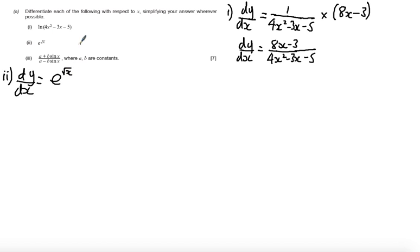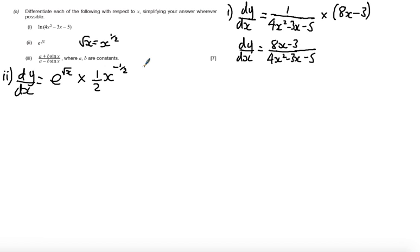Then differentiating the inside function — remember that the square root of x is equal to x to the power of a half. So differentiating x to the power of a half, we multiply by a half and decrease the power by 1 to give x to the minus a half. Tidying up, dy/dx equals 1 over 2 times the square root of x, times e to the root of x.